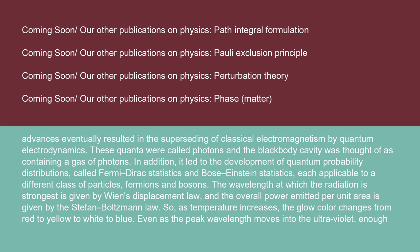These quanta were called photons, and the blackbody cavity was thought of as containing a gas of photons. In addition, it led to the development of quantum probability distributions called Fermi-Dirac statistics and Bose-Einstein statistics, each applicable to a different class of particles — fermions and bosons.